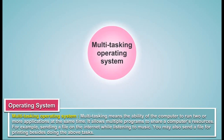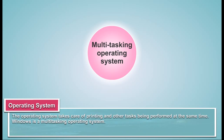Multitasking Operating System: Multitasking means the ability of the computer to run two or more applications at the same time. It allows multiple programs to share a computer's resources. For example, sending a file on the internet while listening to music. You may also send a file for printing besides doing the above tasks. The operating system takes care of printing and other tasks being performed at the same time. Windows is a multitasking operating system.